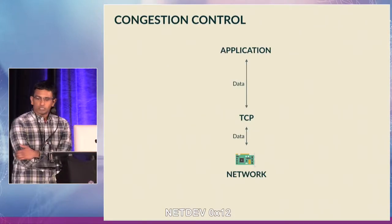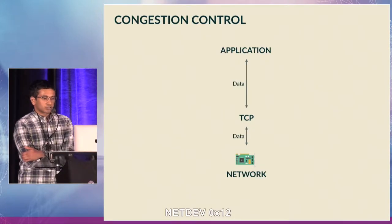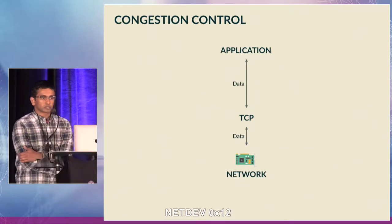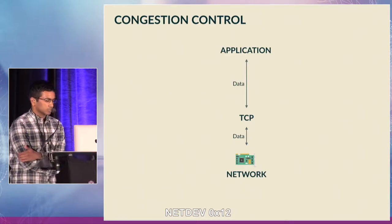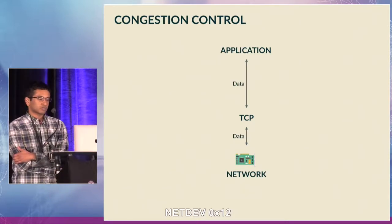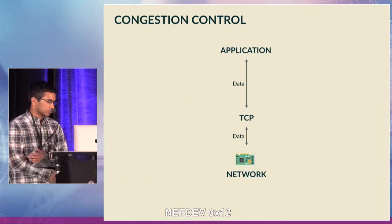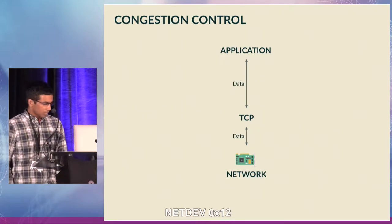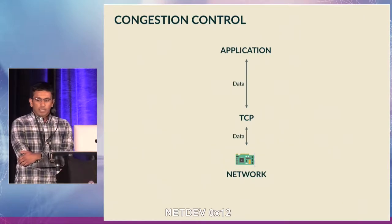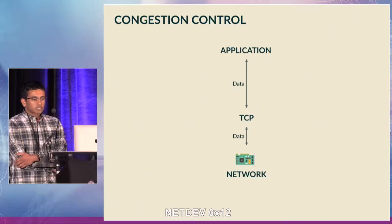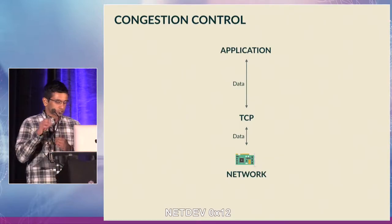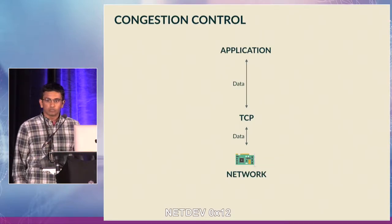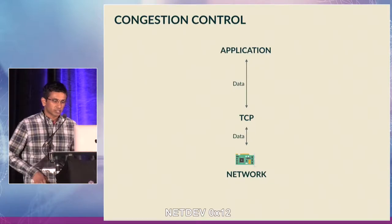This is basically how applications send data to the network today. Congestion control, as we just heard about, is a fundamental problem in networking. The question it answers is when should we send the next packet. Historically, a natural place to implement congestion control is in the transport layer, and the two remain pretty tightly interwoven today.